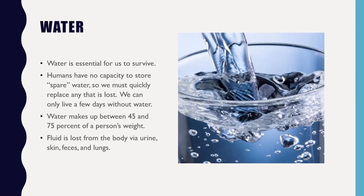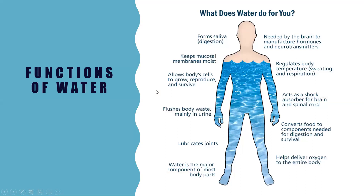Next, water. Water is essential for us to survive. Humans have no capacity to store spare water, so we must quickly replace any that is lost. We can only live a few days without water. Water makes up between 45 and 75% of a person's weight. Fluid can be lost via urine, skin, feces, and lungs. Think of water as a highway that moves nutrients and waste between our cells and organs. We also do get some water from foods.